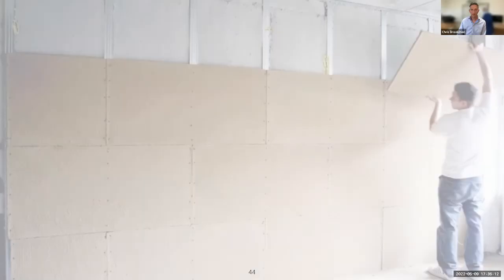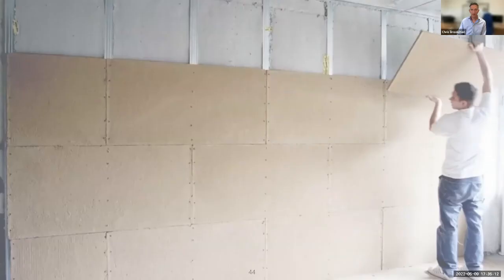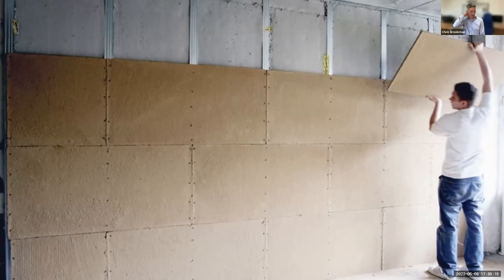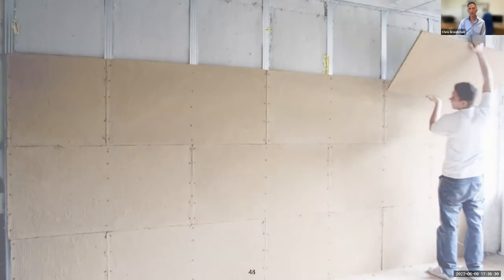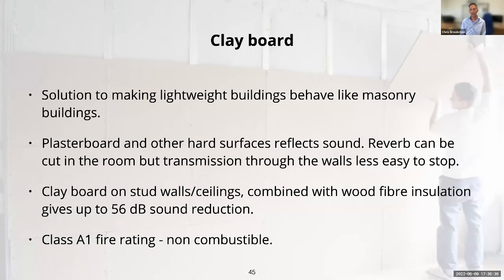Moving on to clay boards — these are quite a useful material when working with timber frame. For acoustic insulation the wood fibre does well, but clay boards take it to a whole new level. They're a really useful way of making lightweight buildings behave like masonry. Even in a masonry building, the actual penetration of heat over the course of a day only tends to be about 30 to 50 mm into the surface. A 25 mm sheet of clay board gives you very similar thermal mass, creating a much more thermally stable building.